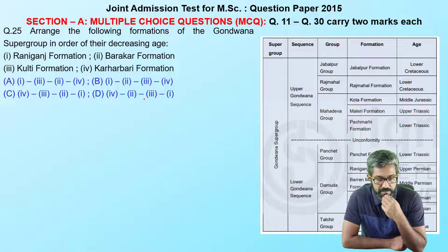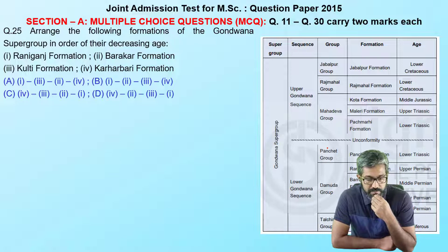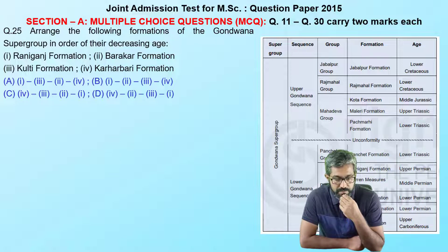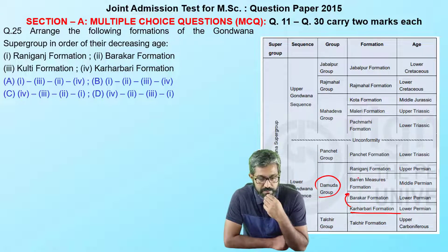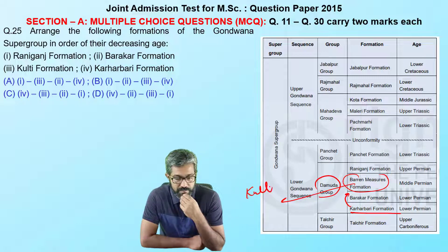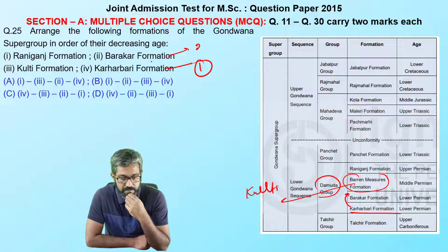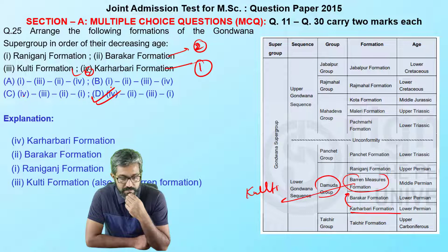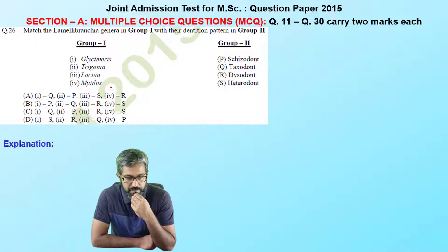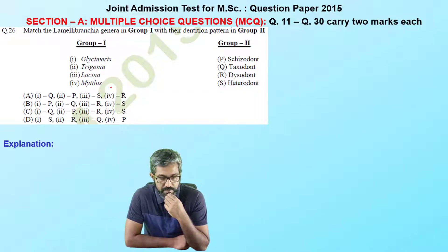This question is very easy if you remember Gondwana stratigraphy — please learn it by heart. Checking the decreasing order: in the Gondwana succession, we have the Karharbari Formation first, then the Barakar Formation, then the Barren Measures (also known as Kulti Formation). The sequence goes Karharbari, then Barakar, then Kulti. Using elimination, my answer is D.